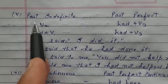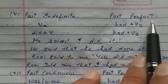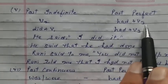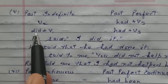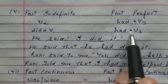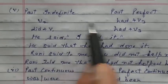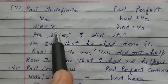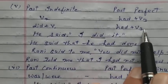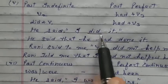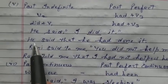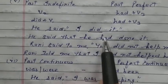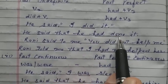Next, past indefinite changes into past perfect. This means the second form of the verb changes into had plus third form, and did plus first form changes into had plus third form. For example: 'He said I did it' — here second form — changes to 'He said that he had done it.' Second form changes into had plus third form.